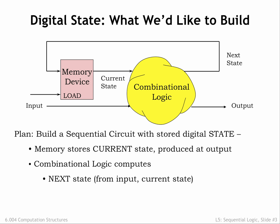One set of outputs is the next state of the device, encoded using the same number of bits as the current state. The other set of outputs are the signals that serve as the outputs of the digital system. The functional specification for the combinational logic — perhaps a truth table or maybe a set of Boolean equations — specifies how the next state and system outputs are related to the current state and current inputs.